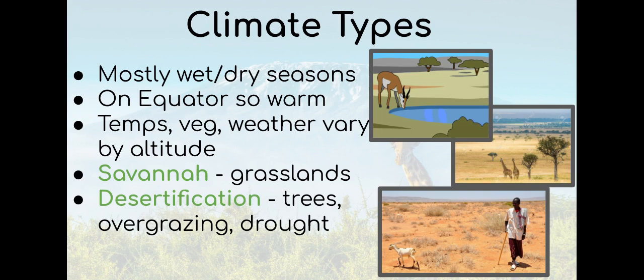We have two new vocabulary words. Savannah, which is a grassland, is pictured here. Desertification is the process where vegetation disappears. It is caused by three factors: cutting down trees, overgrazing by animals, and drought.